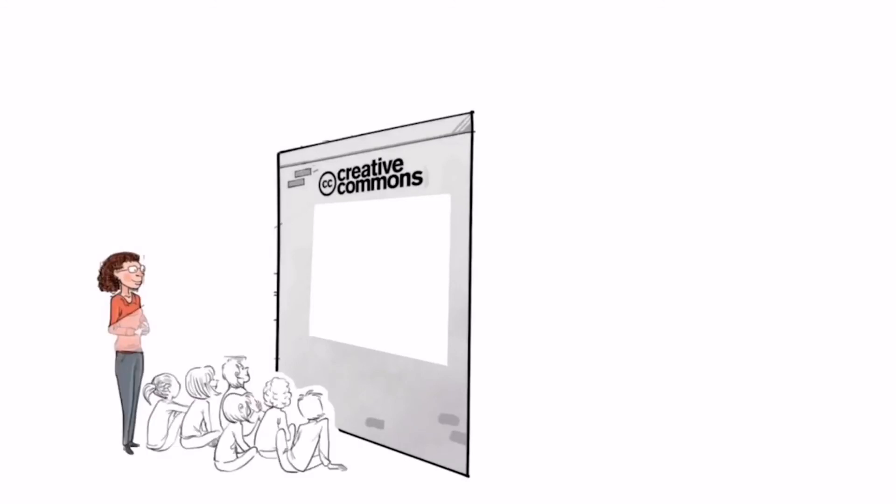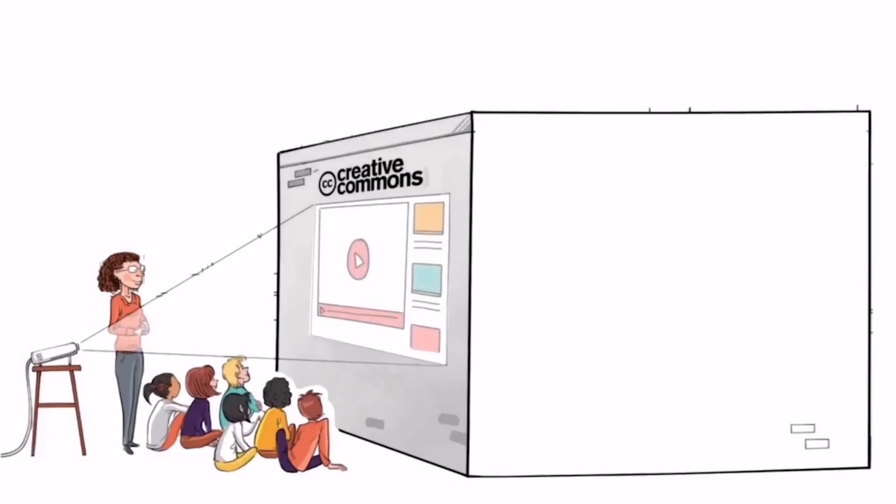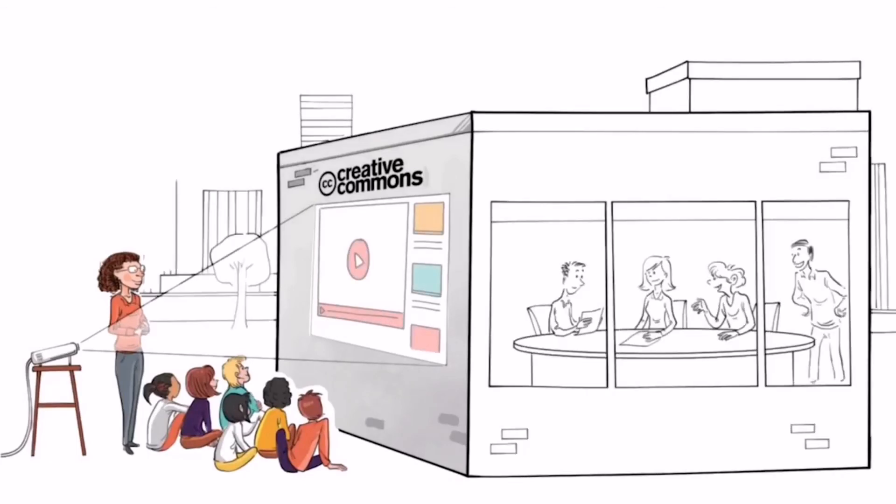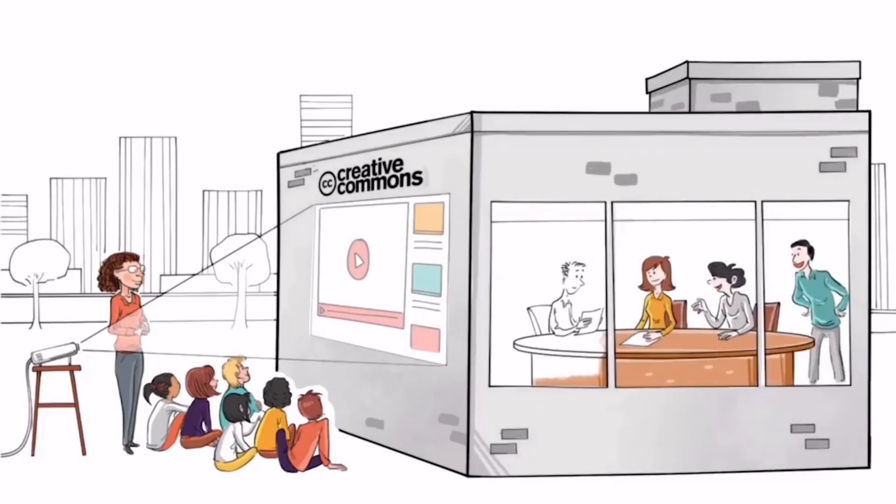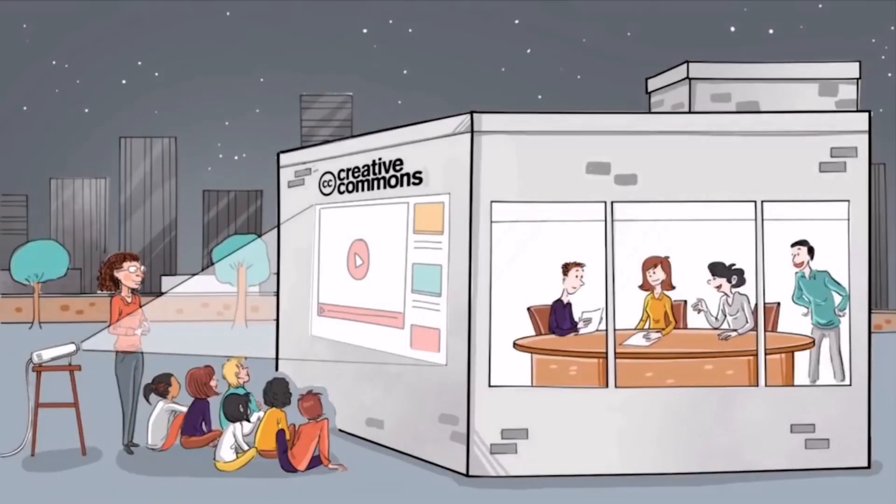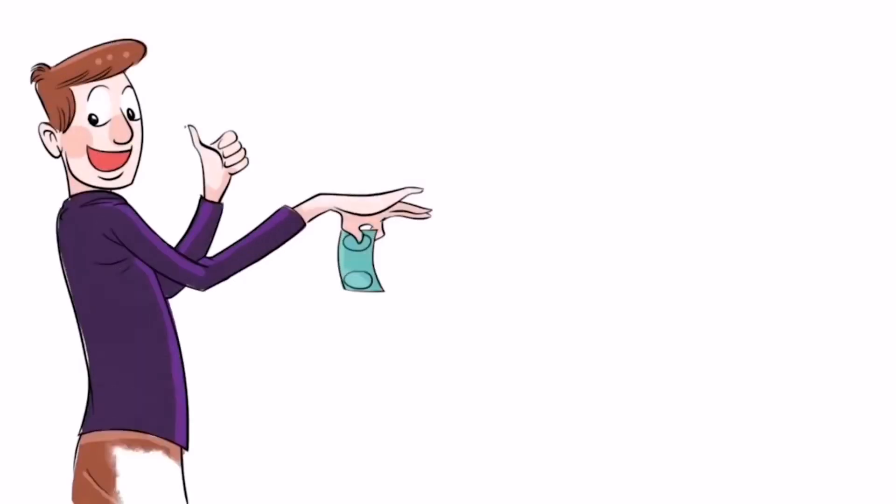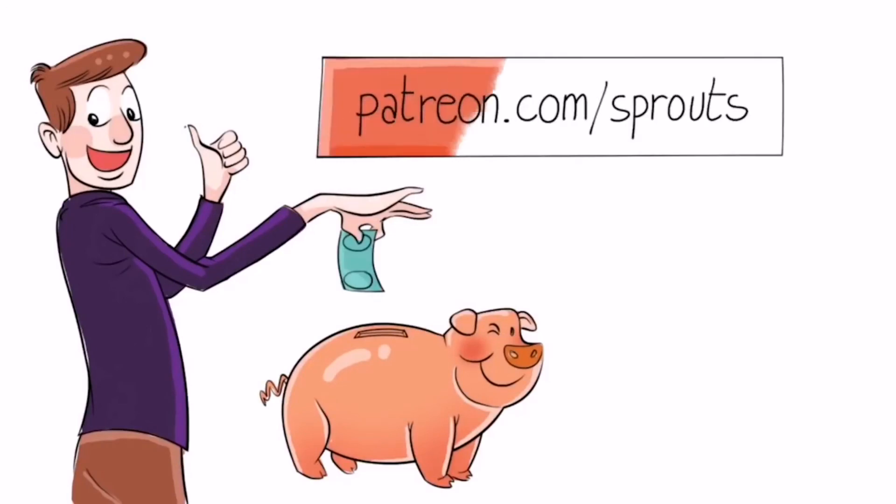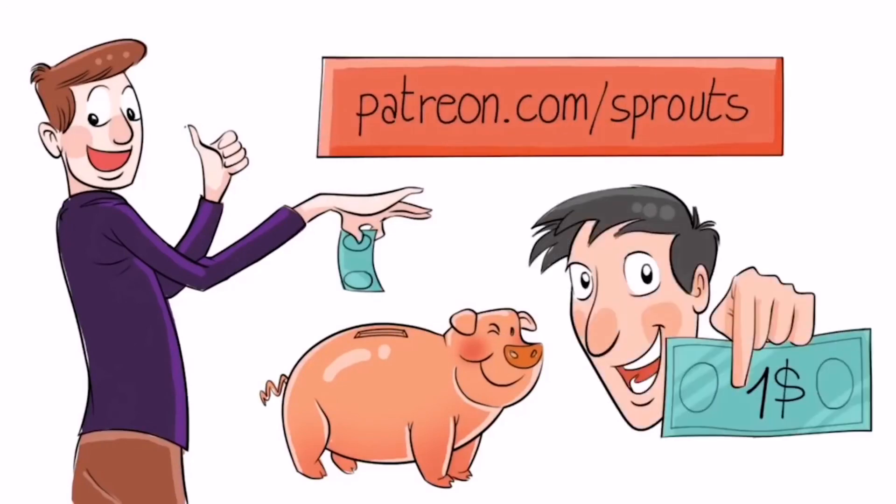Sprouts videos are published under the Creative Commons license. That means our videos are free and anyone can download, edit, and play them for personal use. And public schools, governments, and non-profit organizations can also use them for training, online courses, or designing new curriculums. To help us stay independent and support our work, you can join our patrons and contribute. Just visit patreon.com/sprouts. Even $1 can make a difference.